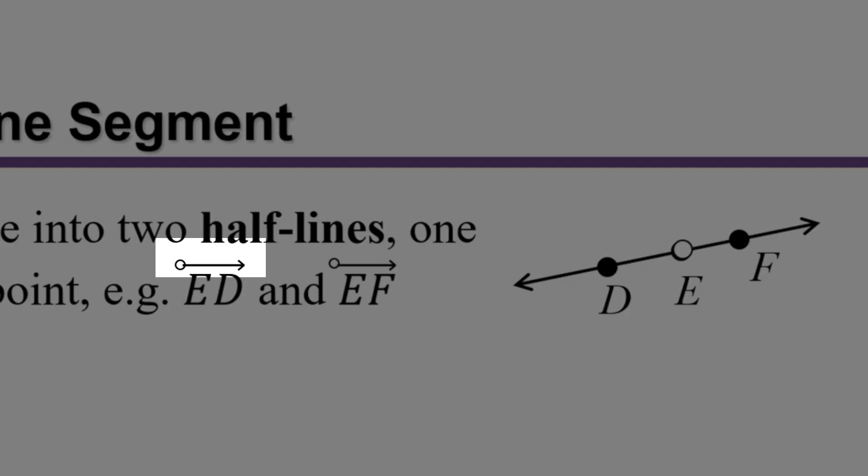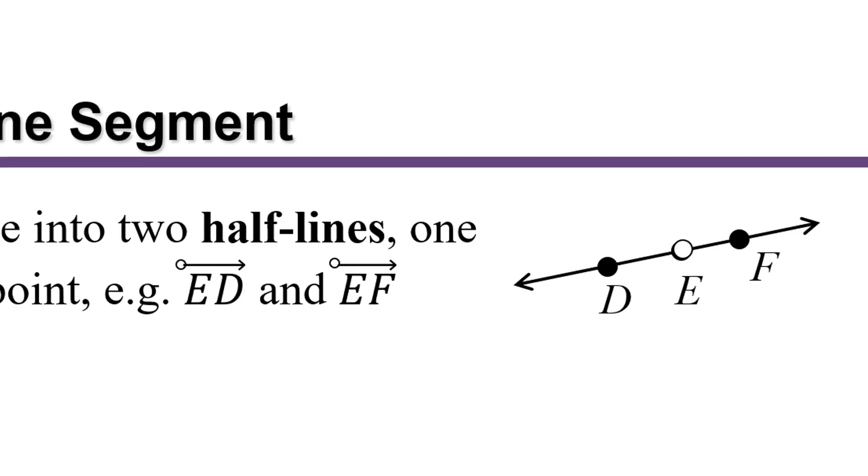Notice that to indicate this, we have a little open dot at the beginning of the symbol above the two letters rather than having an arrow at the beginning of the symbol, which would have indicated a full line.